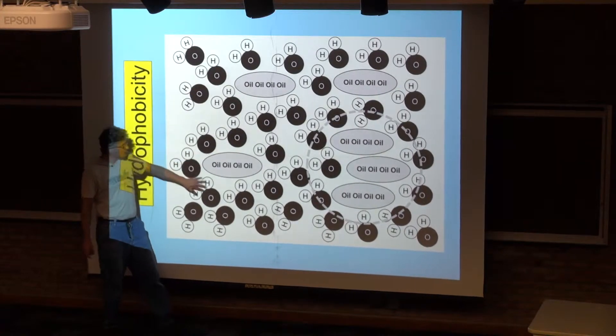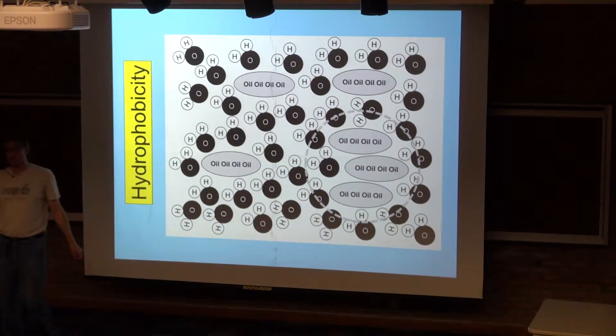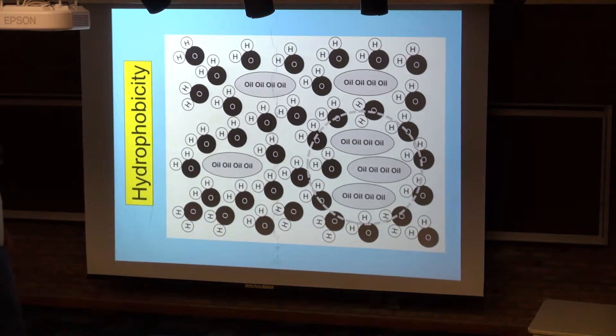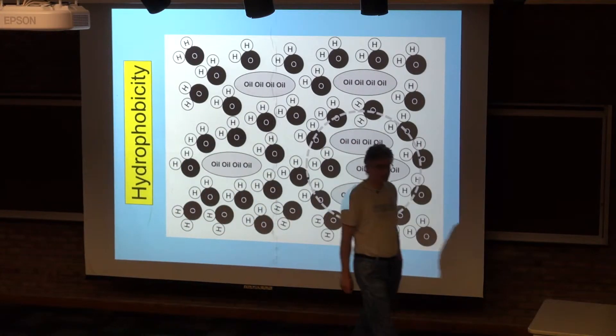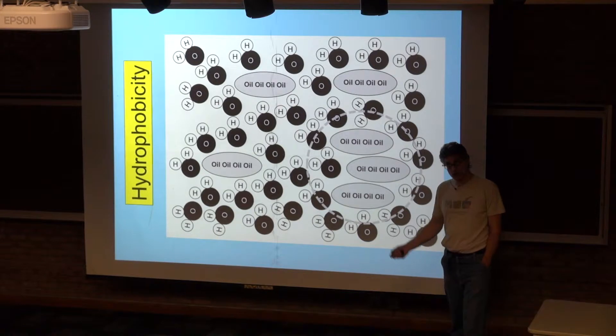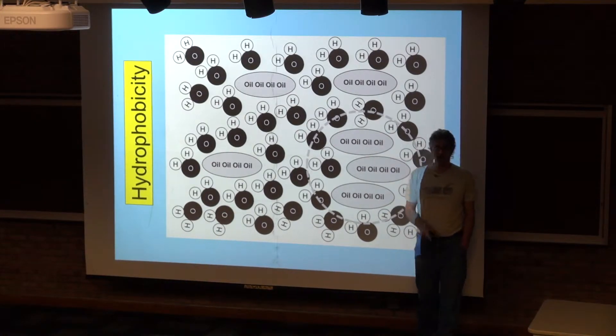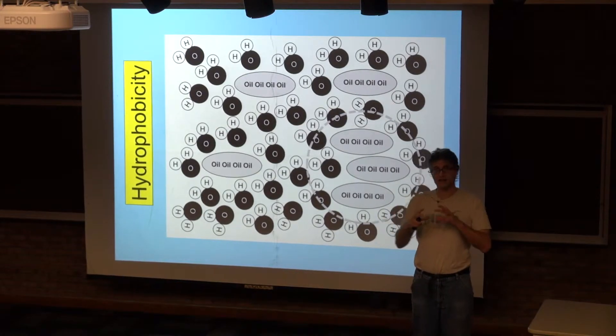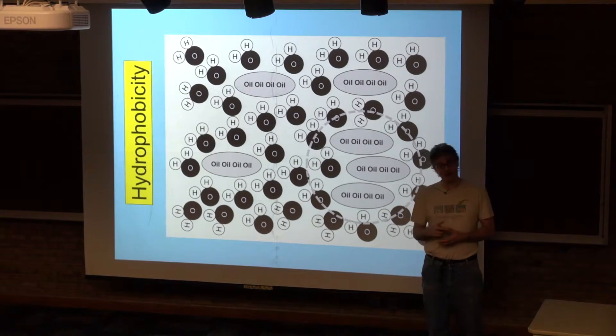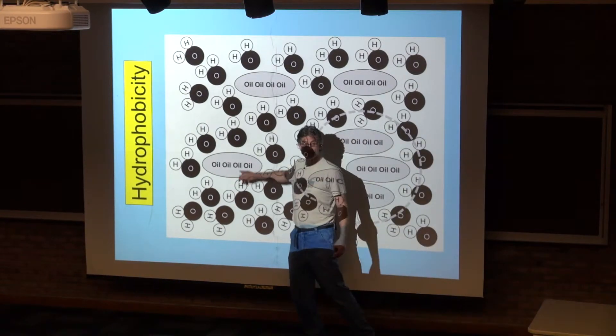In a sense, water forms a layer around these substances, minimizing water's interaction with the substance. One way to reduce the interaction even further is by having the substance clump together. When it clumps together, it forms a volume with a smaller surface-to-volume ratio.